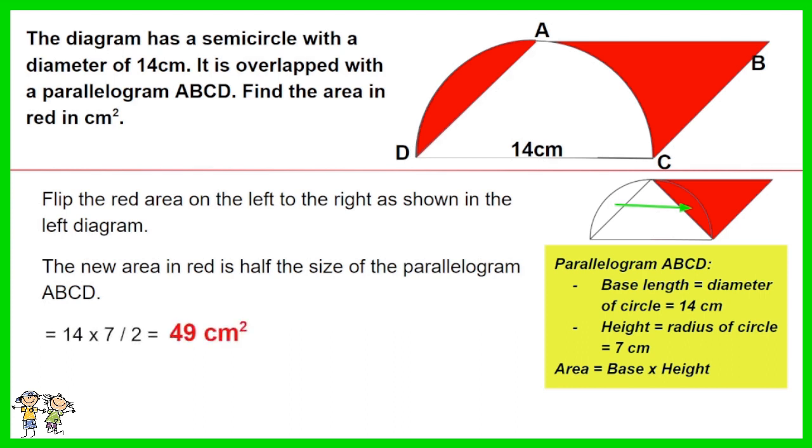Area of a parallelogram is base times height. Given the red area is only half of the parallelogram ABCD thus the area is 14 times 7 divided by 2 which gives you the result of 49 centimeters squared.